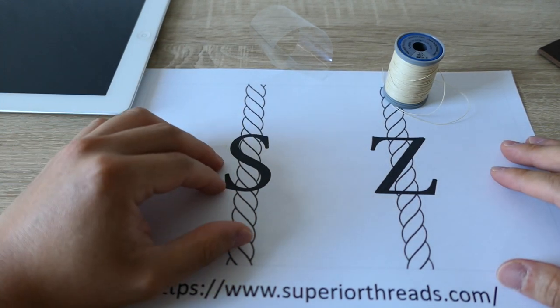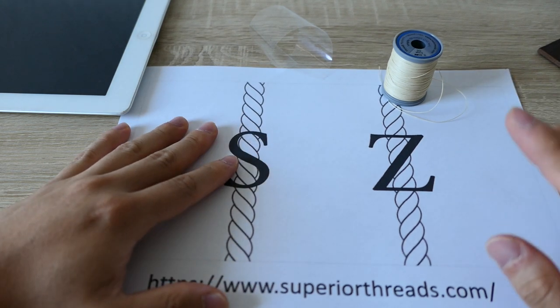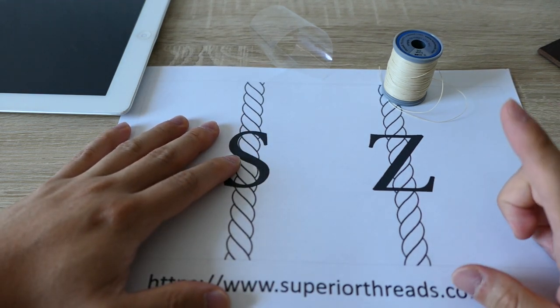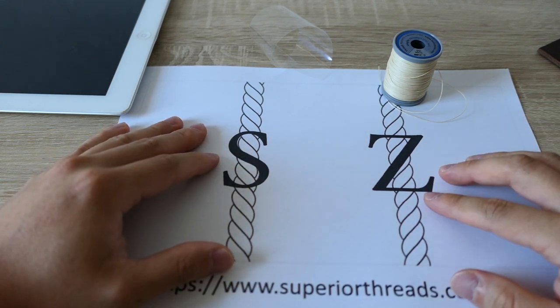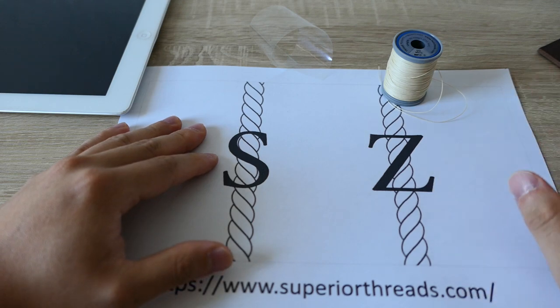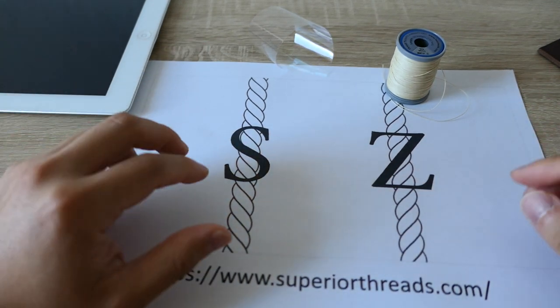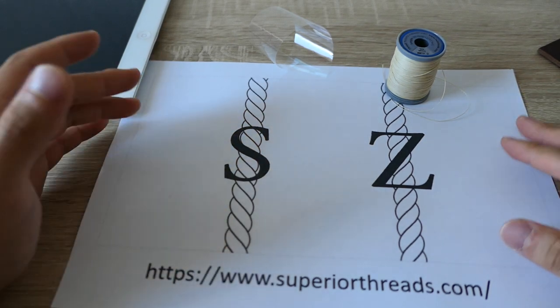So it's really hard to find S-twists because these are only for hand stitch. And you can do hand stitch with this, and you can do machine stitch with this also. So that's why there are many more Z-twist threads.